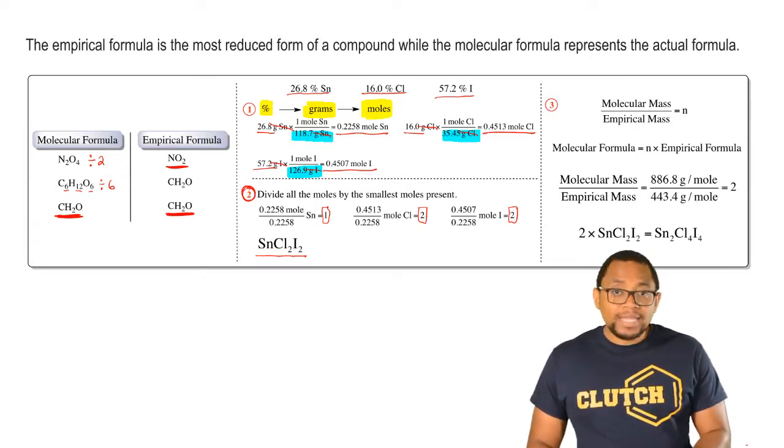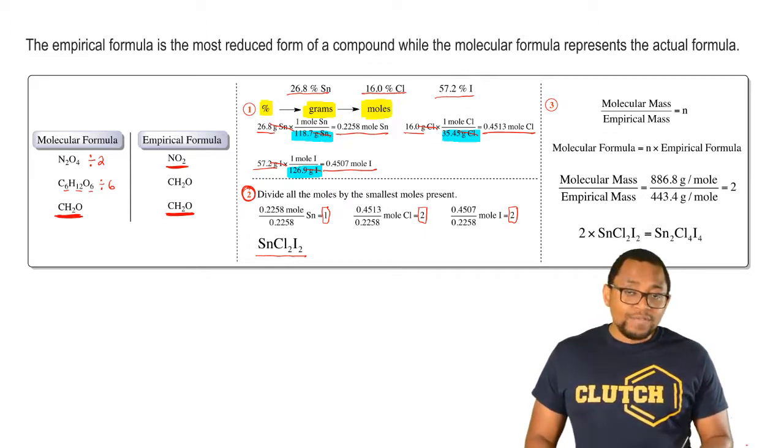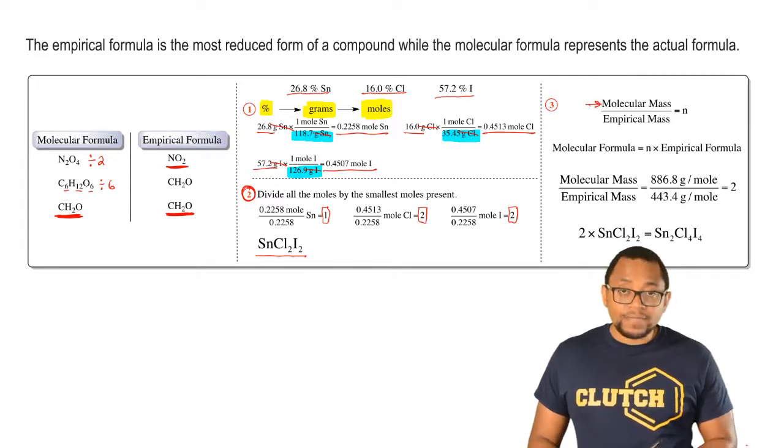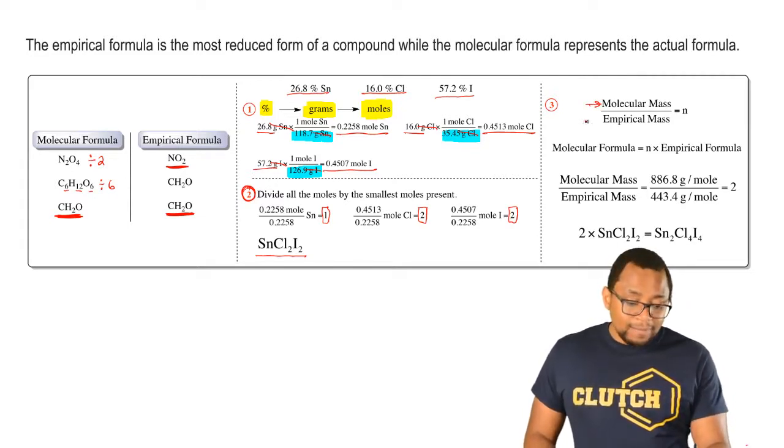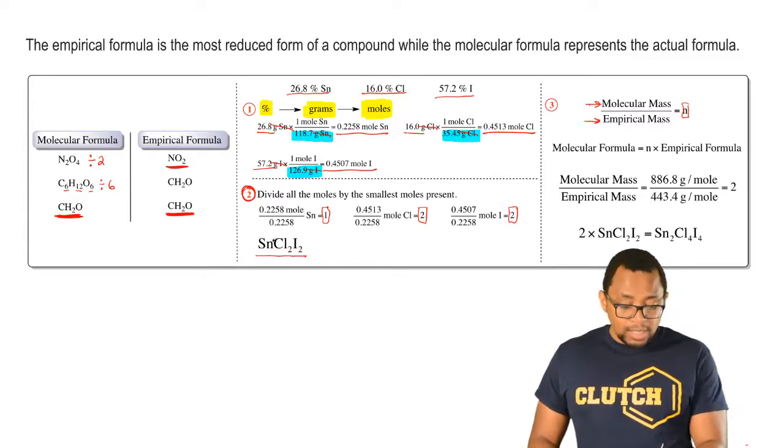Sometimes they may ask you to find the molecular formula once you've found your empirical formula. To solve that, you say molecular mass, which they'll give you in the question, divided by the empirical mass, gives us a variable n. The empirical mass comes from the empirical formula you've found.